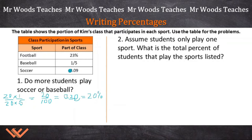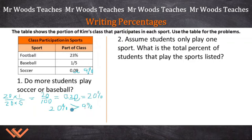So we've written the percent for baseball. Now for soccer, 0.09 — we just move the decimal point two places, giving us 9%. Let's compare using an inequality. We have baseball at 20% and soccer at 9%. 20% is greater than 9%, so therefore more students play baseball than soccer. More students play baseball. That's all you needed to do to answer the question.